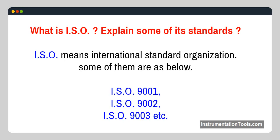What is ISO? Explain some of its standards. ISO means International Standards Organization. Some of its standards are: ISO 9001, ISO 9002, ISO 9003, etc.